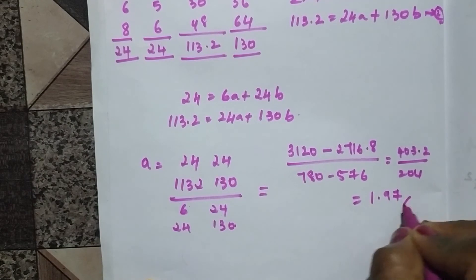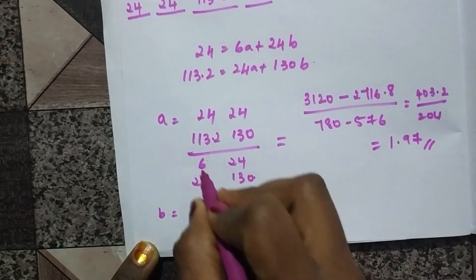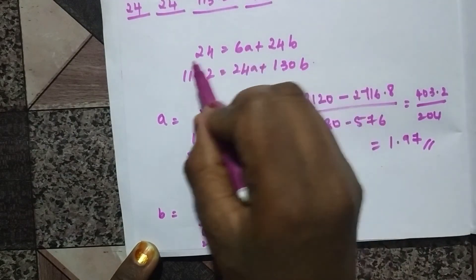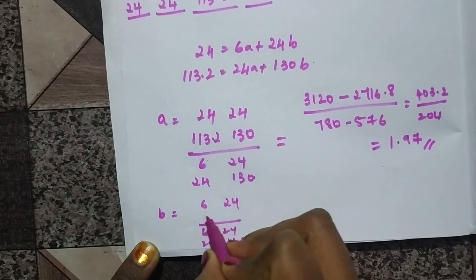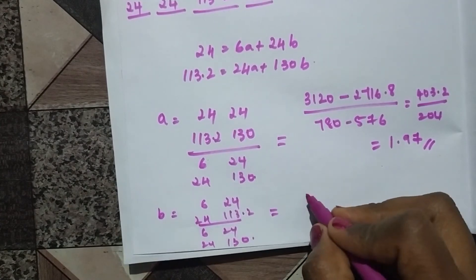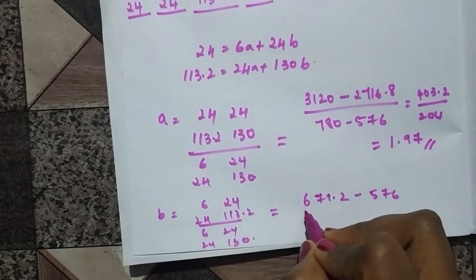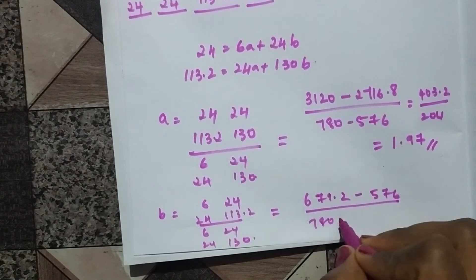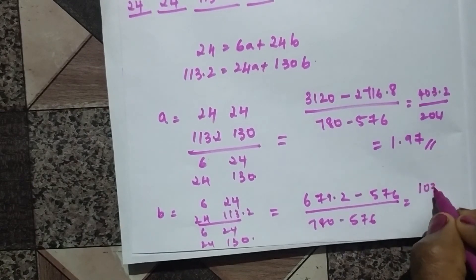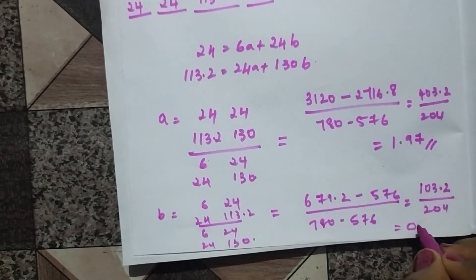Now let's find 'b'. The denominator is the same — 204. For the numerator we cover the 'b' column and compute: (6×113.2) − (24×24) = 679.2 − 576 = 103.2. So b = 103.2 / 204 ≈ 0.5.